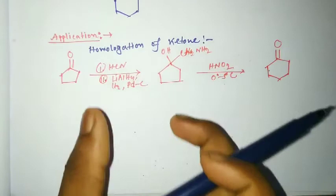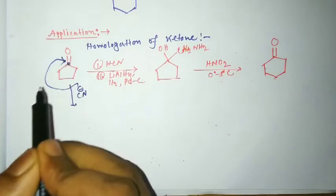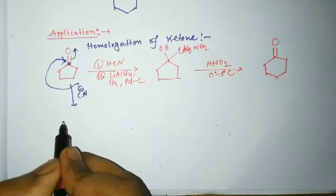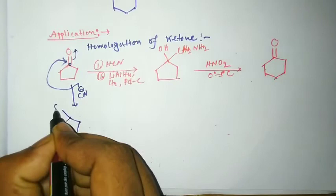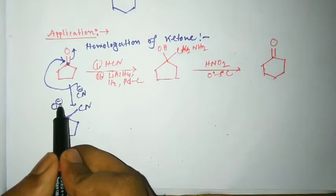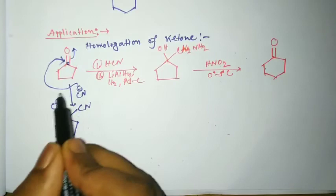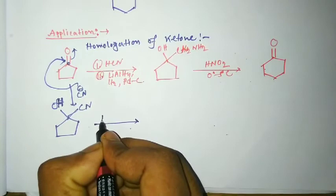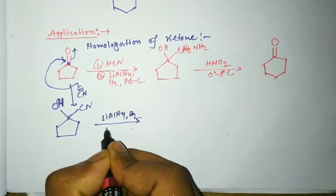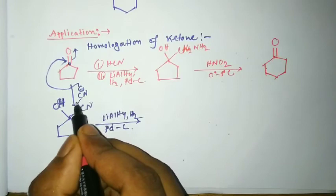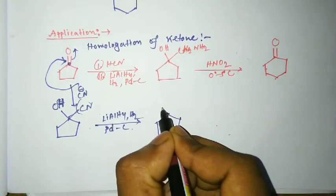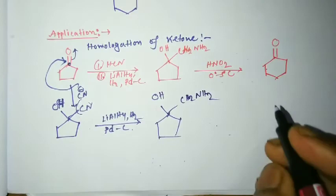Now see its mechanism. CN⁻ attacks the carbonyl carbon — that is, nucleophilic attack takes place and the pi bond breaks, forming the alkoxide. Then OH⁻ abstracts H⁺ to give OH. Then in the presence of lithium aluminium hydride, H2, and palladium on carbon catalyst, the cyanide group undergoes reduction to form CH2NH2.